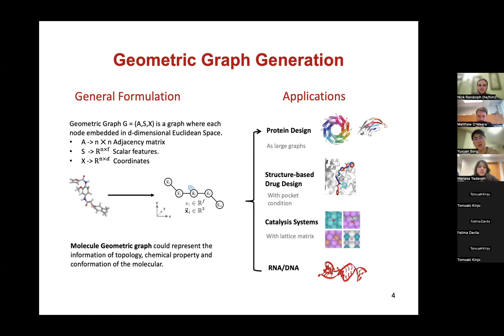The task of geometric graph generation has a lot of applications. First, protein design can be seen as the generation of large geometric graphs. Structure-based drug design can be seen as a conditional generation task where we condition on the pockets. Catalysis systems require not only generating geometric graphs but also generating extra variables like lattice metrics. RNA and DNA design is also within the scope of geometric graph generation.